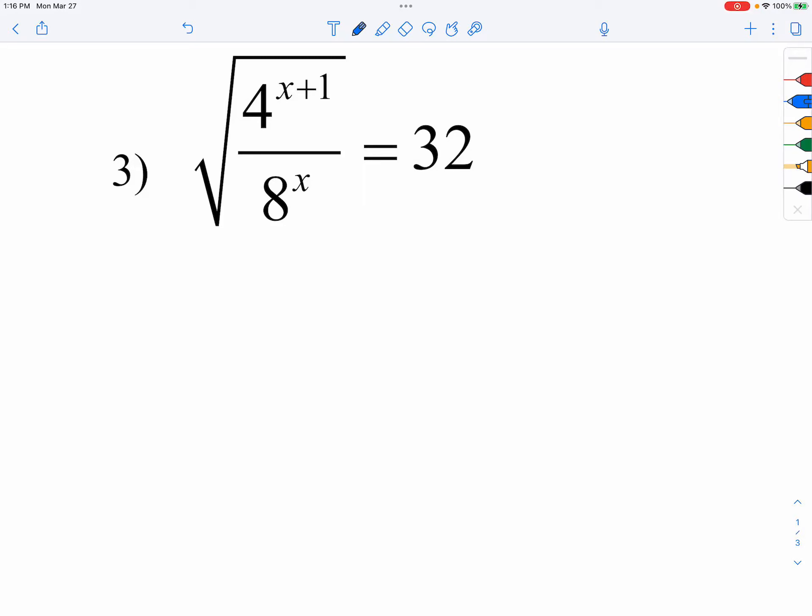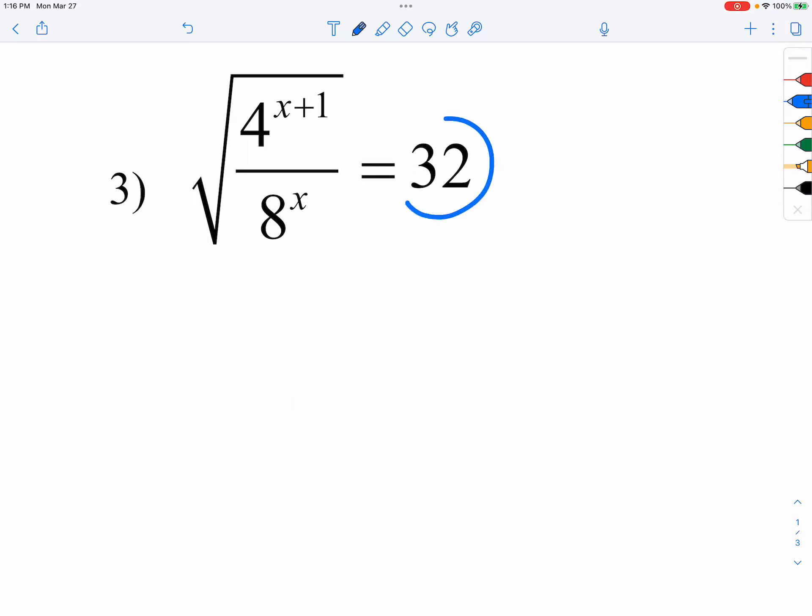So now, some of you might be thinking, can we square both sides? You may. If you do square both sides, I would just give you a little advice: just go ahead, leave it at 32 squared, just don't actually multiply 32 times 32.